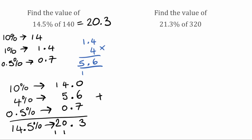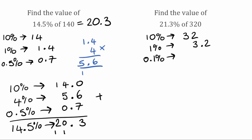For this next question we've got 21.3% of 320. To begin with I'm going to find my 10%. So we take 320, divide it by 10, that gives us 32. We then divide by 10 again to find 1%, so 32 divided by 10 gives us 3.2. Now we've got to find the remaining 0.3%, so we're going to find our 0.1% by dividing by 10 again — that gives us 0.32.